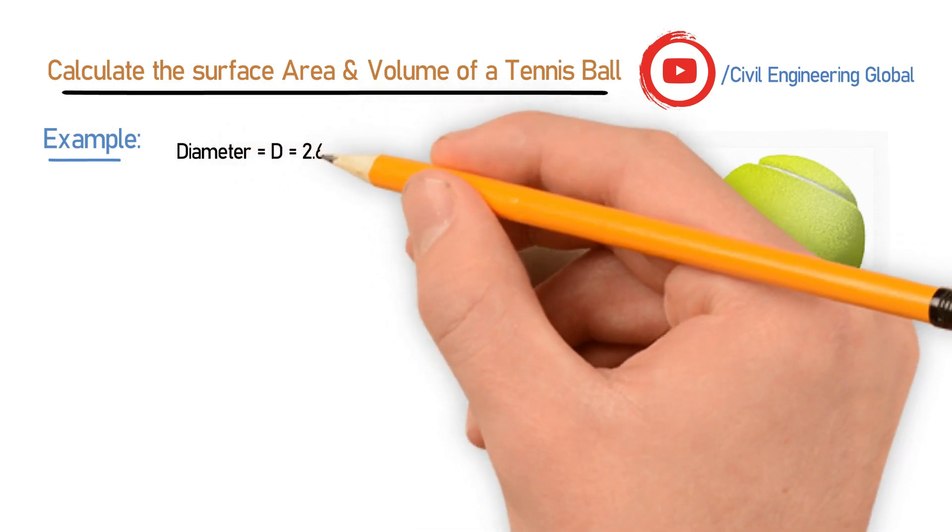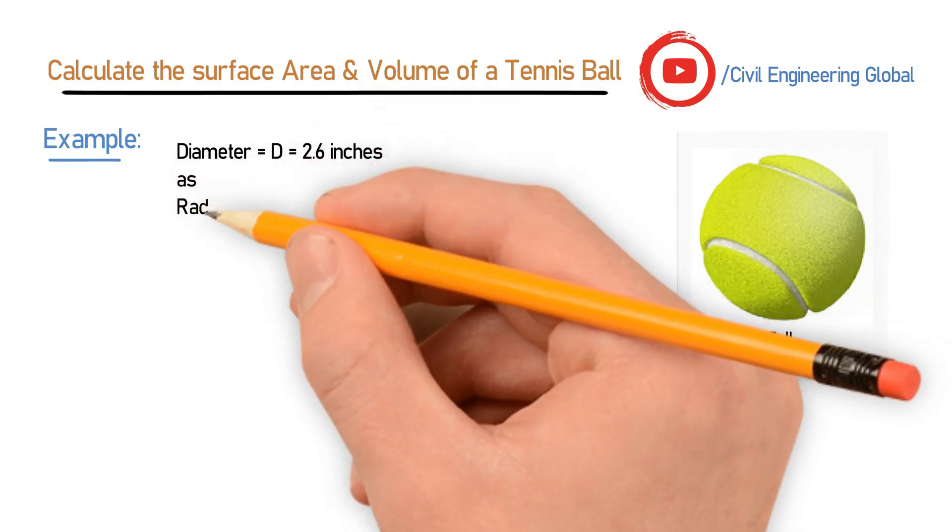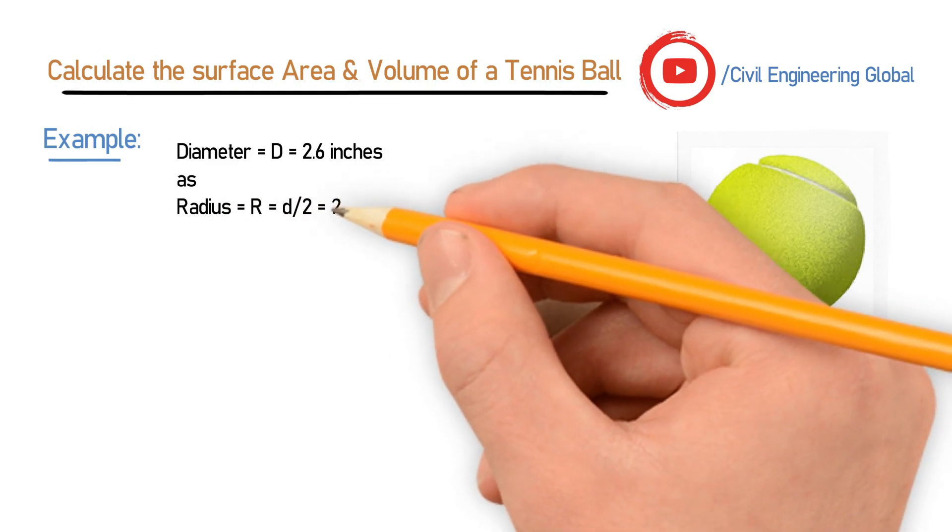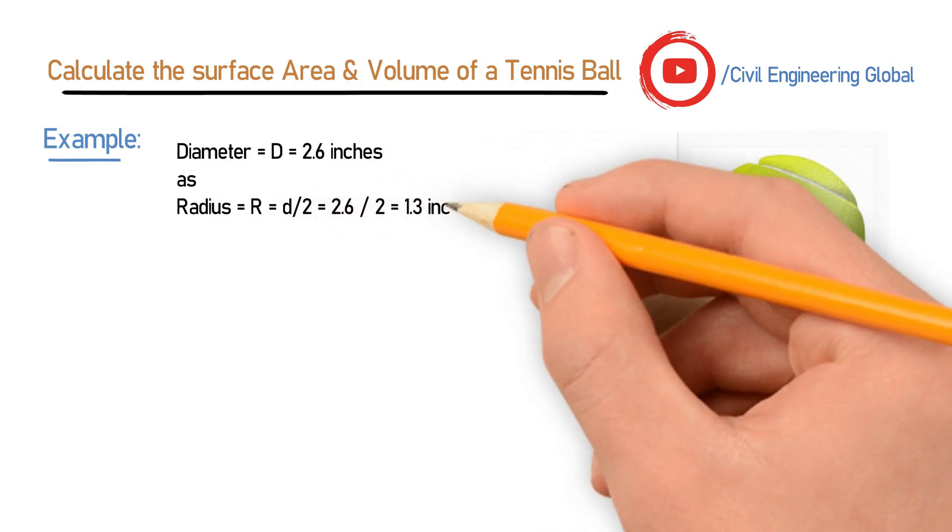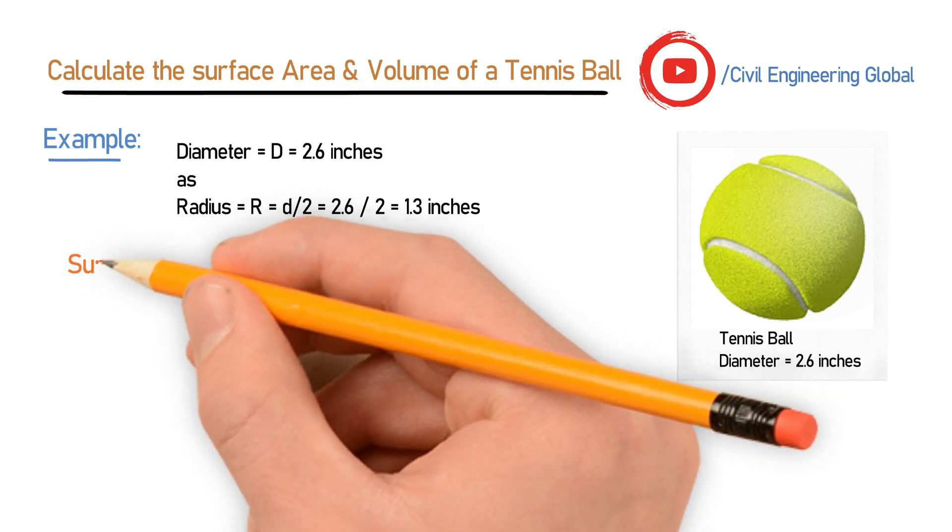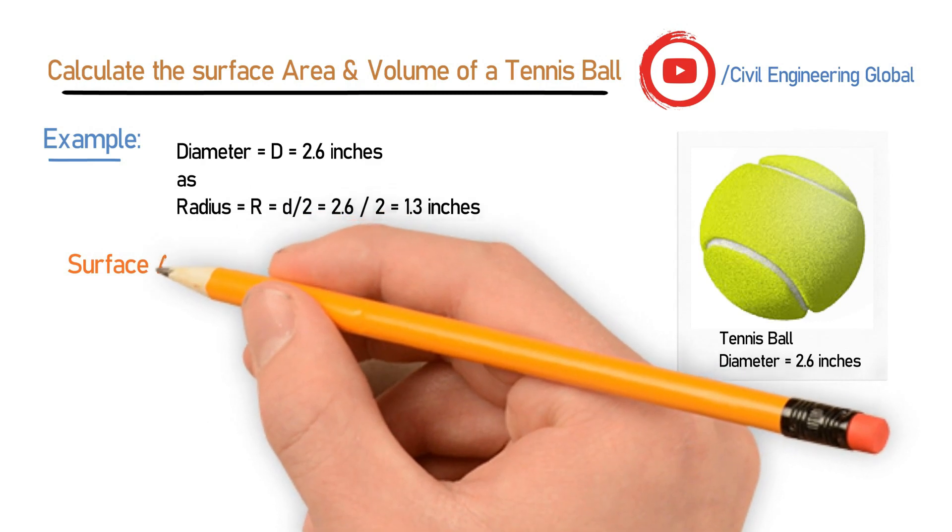As we know, the radius is diameter divided by 2. So diameter is 2.6 divided by 2, which equals 1.3 inches. After finding out the radius, let's calculate the surface area.